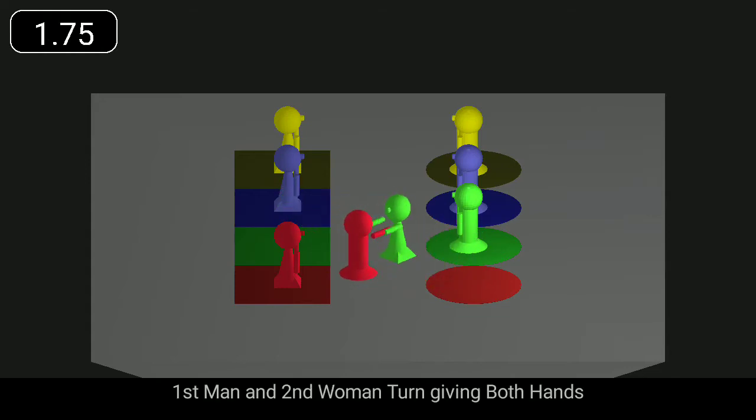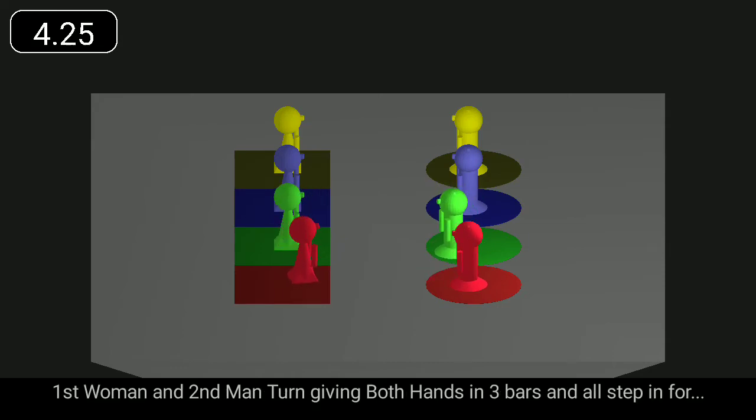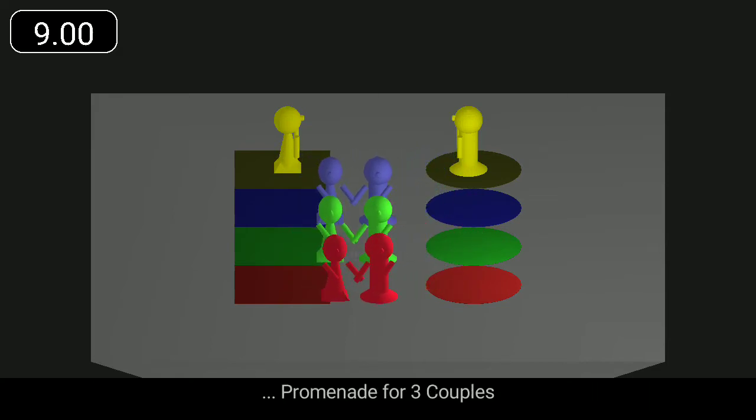First man and second woman turn giving both hands. First woman and second man turn giving both hands in three bars and all step in for promenade for three couples.